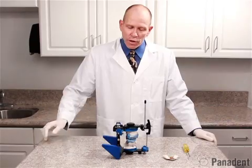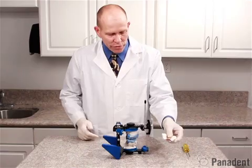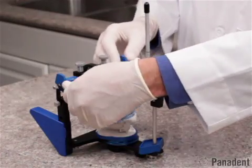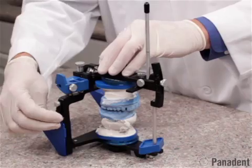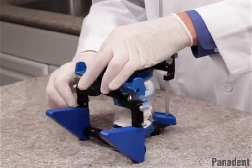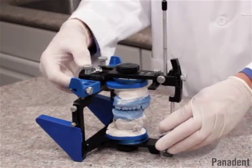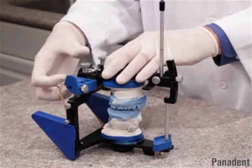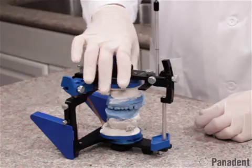We're now ready to set our condylar inclination using our protrusive check bite. In preparation for that, we do want to loosen the screw here on the analog so we can remove our Dynalink pin and put it in its little storage hole in the lower frame of the articulator. We can also release the centric latch and use the rubber band on the bottom of the articulator to help hold that latch out of our way.